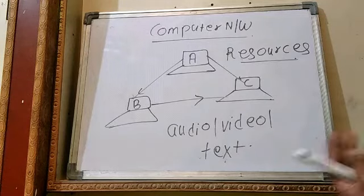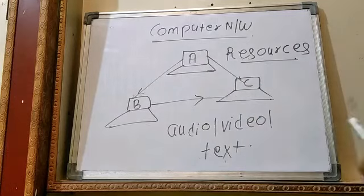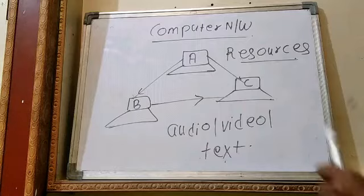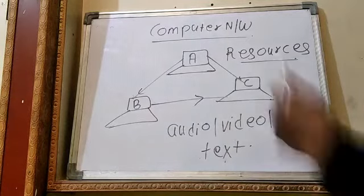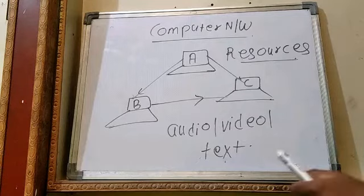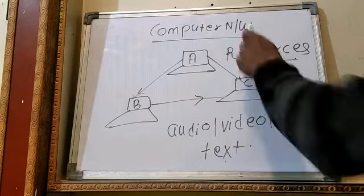Now anything that they are sharing that is useful for one computer or another computer is called a resource. So now I don't have connection directly with B computer or C computer, so I need a medium, I need a connection. That connection in computer language is called a network.